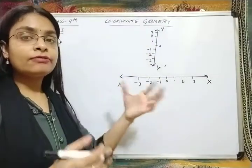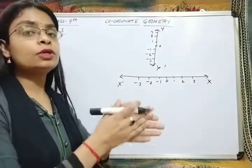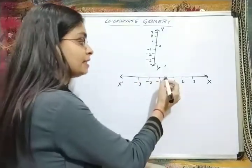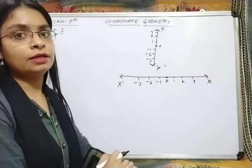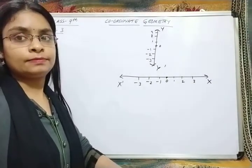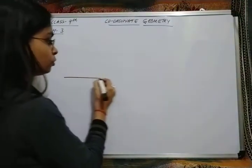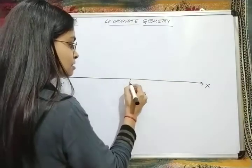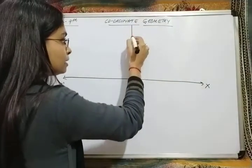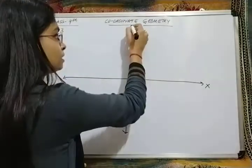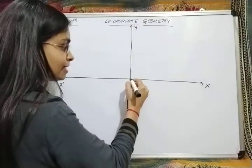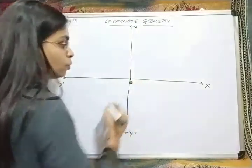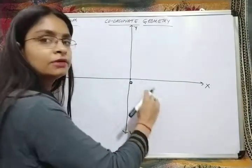If I place these two lines such that they are mutually perpendicular and they intersect at the 0 of each other — that is, the 0 of the vertical line coincides with the 0 of the horizontal line — then a Cartesian system is formed. I draw the horizontal line as x and x dash, and the vertical line as y and y dash. The intersecting point of these two lines we denote by O.